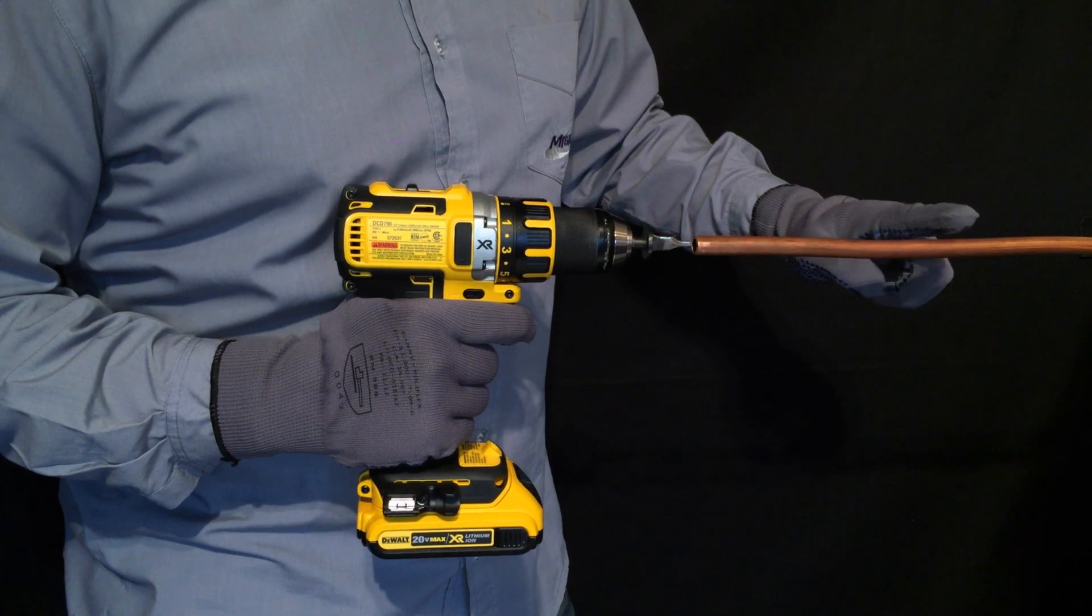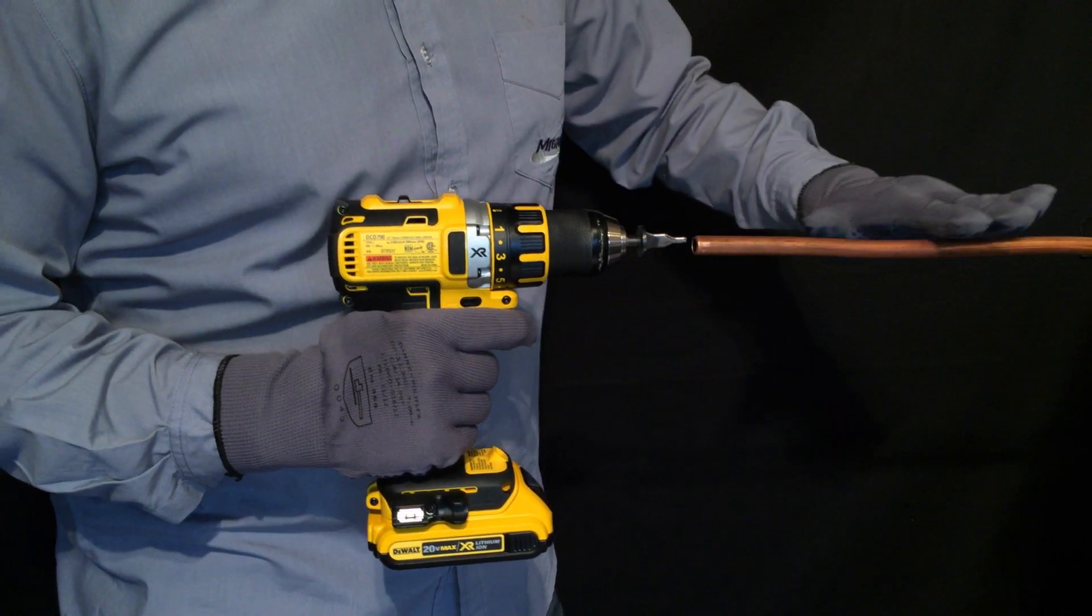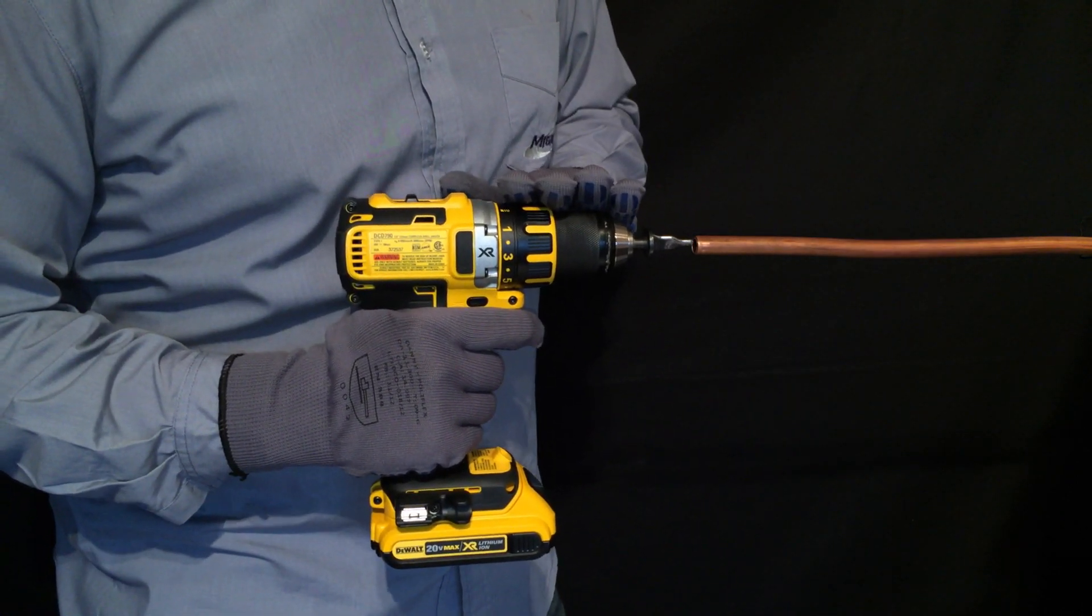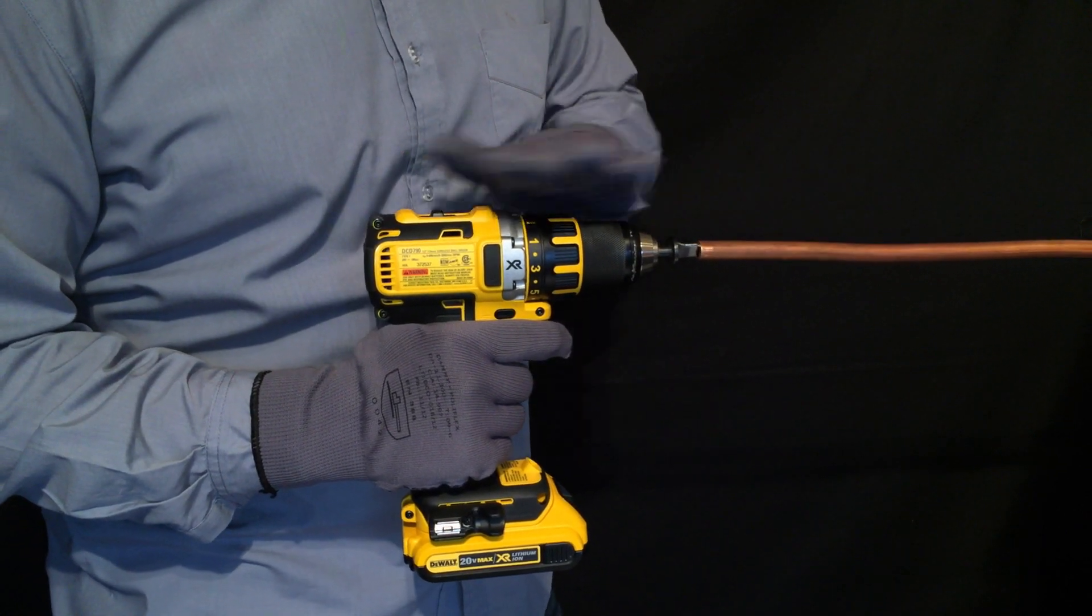The secret to working with the flannel spin is about alignment. You always want to keep the tube aligned with the drill itself.